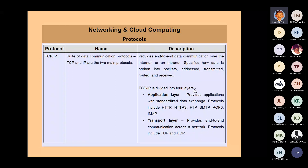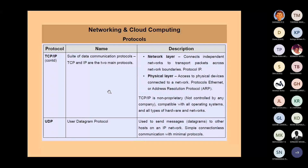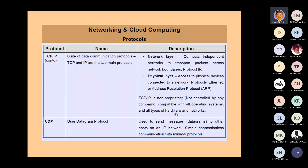In TCP/IP, it's divided into four layers: an application layer, a transport layer, a network layer, and a physical layer. You won't get detailed questions on this, but it gives you good background for using TCP and UDP. One of the good things about TCP/IP is that it's non-proprietary — not controlled by any company. It's compatible with all operating systems and all types of hardware and networks, making it a very general set of protocols that can be used basically anywhere.